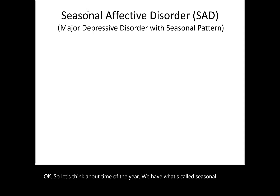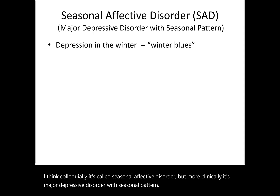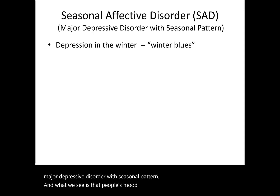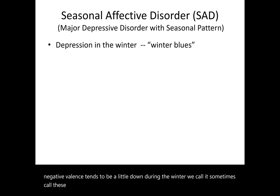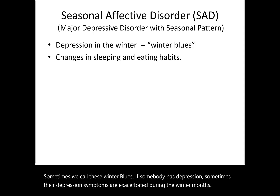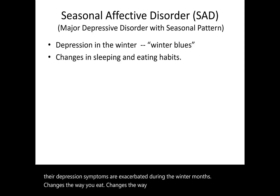Regarding time of year: seasonal affective disorder — SAD — is probably the best acronym out there. The DSM-5-TR places this in the major depressive disorder category, calling it 'major depressive disorder with seasonal pattern.' People's mood tends to have greater negative valence during winter — the 'winter blues.' For those with depression, symptoms are often exacerbated during winter months, with changes in eating, sleep, negative thoughts, and ruminations.